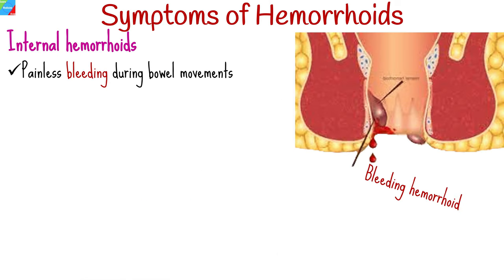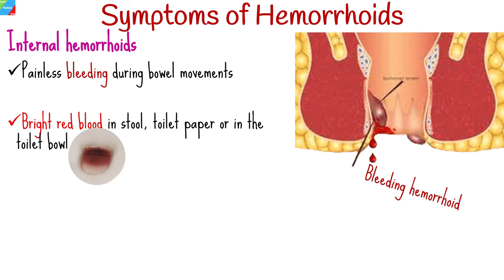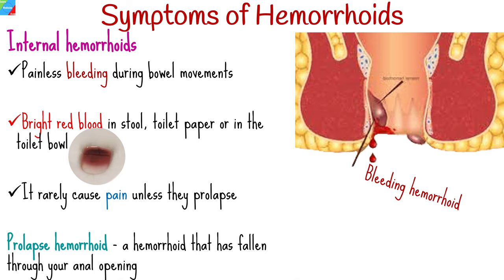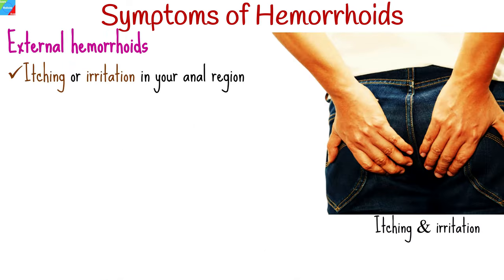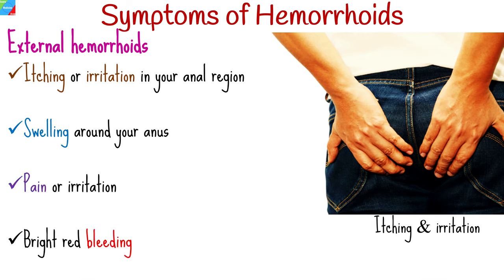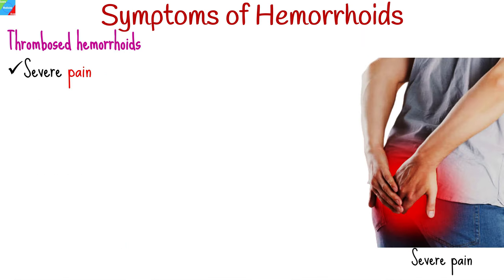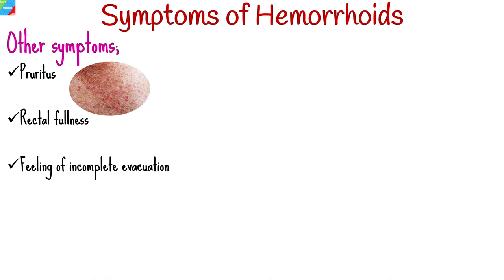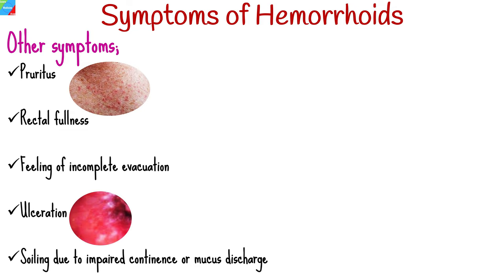Signs and symptoms of hemorrhoids depend on the type. With internal hemorrhoids, you may have painless bleeding during bowel movements — bright red blood in your stool, on toilet paper, or in the toilet bowl. Internal hemorrhoids rarely cause pain unless they prolapse through the anal opening. With external hemorrhoids, you may have itching or irritation in the anal region, swelling, pain, and bright red bleeding. With thrombosed hemorrhoids, you may have severe pain, inflammation, swelling, and a hard lump near the anus. Other symptoms include pruritus, rectal fullness, feeling of incomplete evacuation, ulceration, and soiling due to impaired continence or mucus discharge.